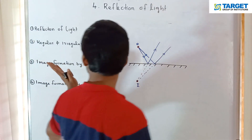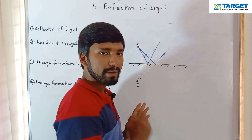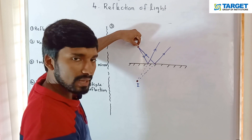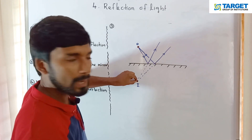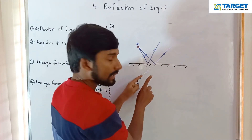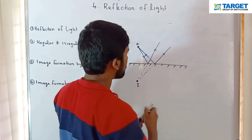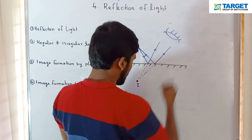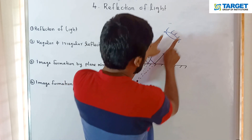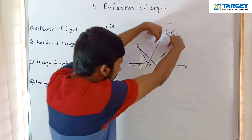The third topic is image formation by a plane mirror. Here we have a plane mirror. An object is placed in front of it. Light rays from the object fall on the mirror and are reflected. Using my eyes, I look at the reflected light rays. The reflected light rays appear to come from a point behind the mirror, allowing us to see the image.